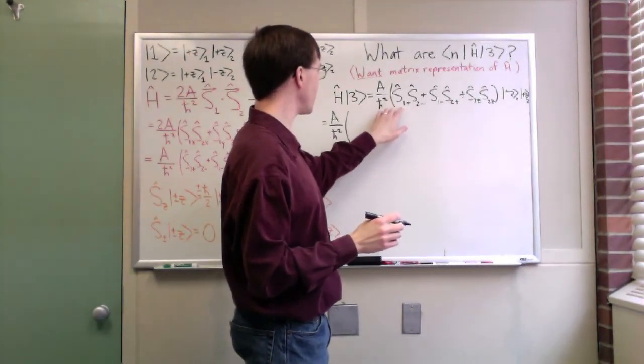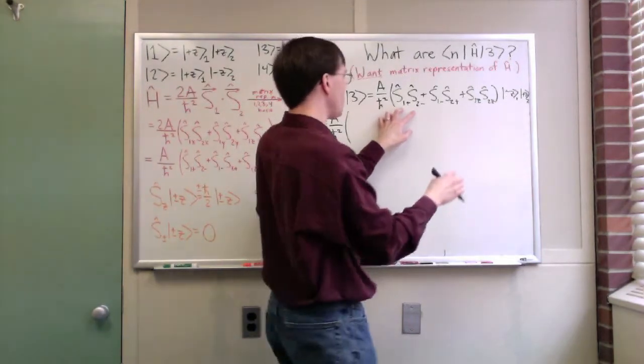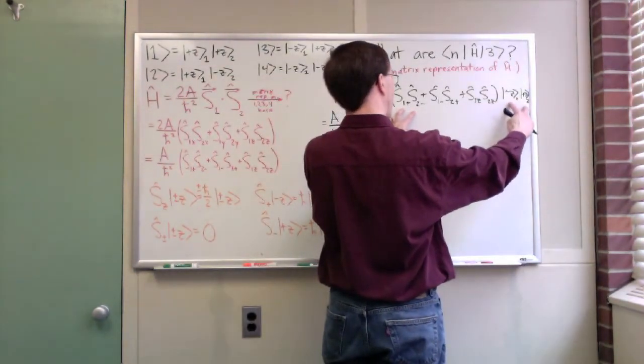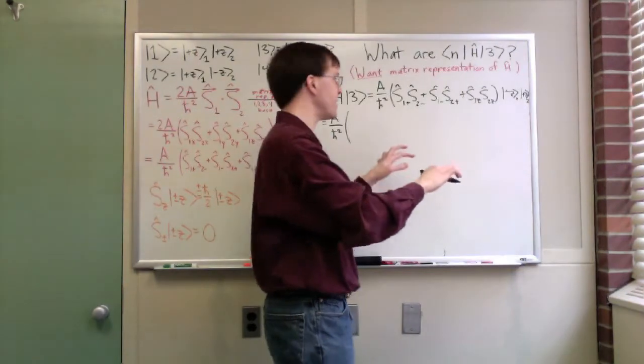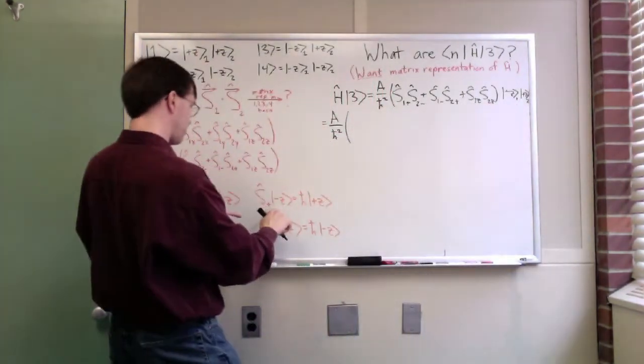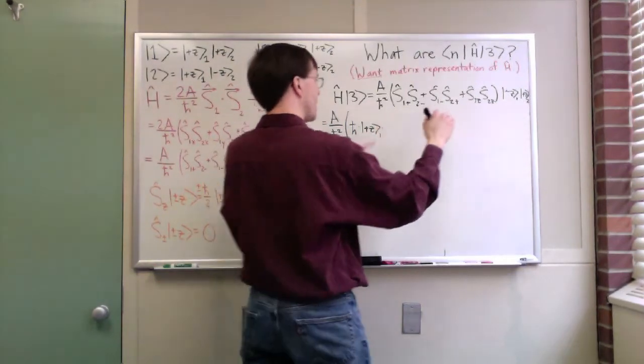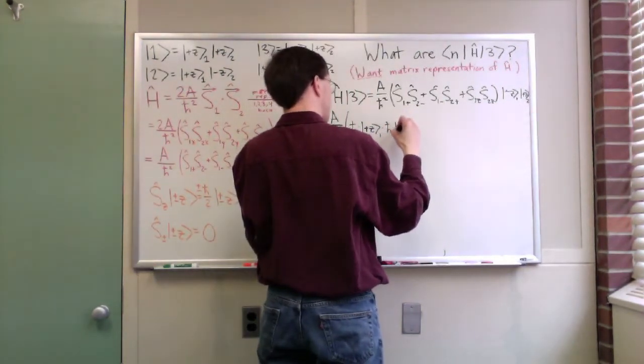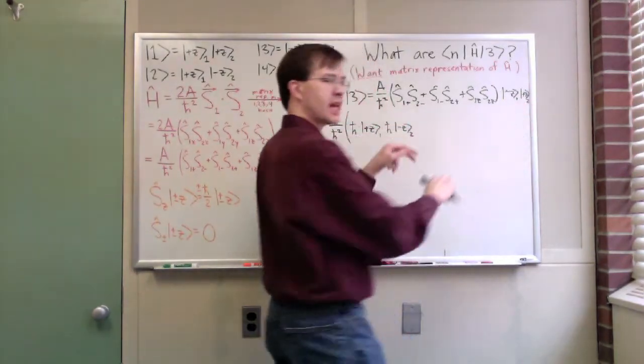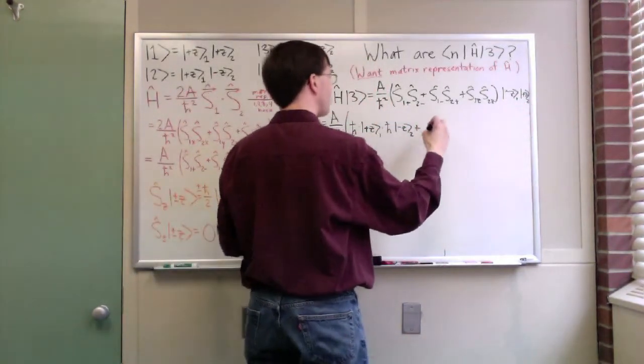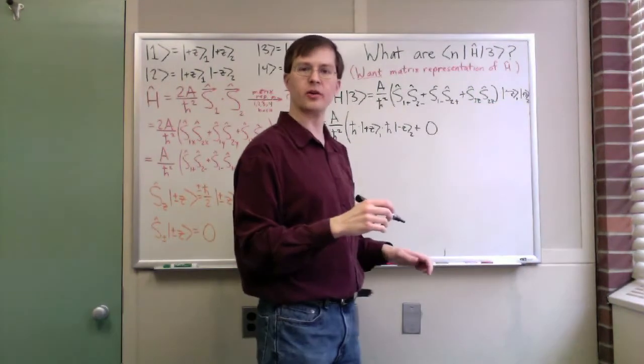This gives me equals a over h-bar squared. We're going to act with these operators on this state each time for each one of our three terms. First term, I'm applying my raising operator S1 plus. S1 plus acting on minus z for particle 1, it passes right through the S2 minus. The particle 1 and particle 2 things pass right through each other. They're independent. S plus applied to minus z gives me h-bar times plus z for particle 1. S2 minus applied to that gives me h-bar times minus z for particle 2. That's my first term. I then go on plus S1 minus applied to minus z. Oh, this is already zero because I'm trying to lower something that's already in the lowest state. No dice there.